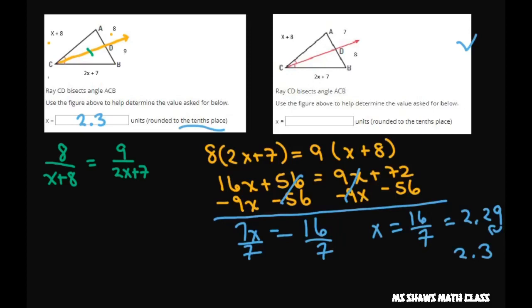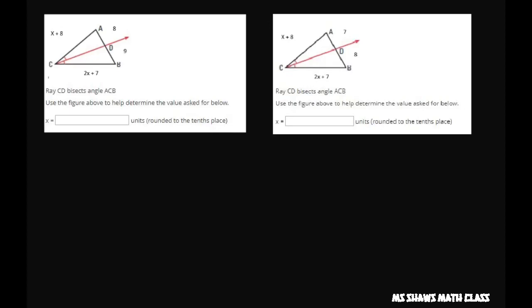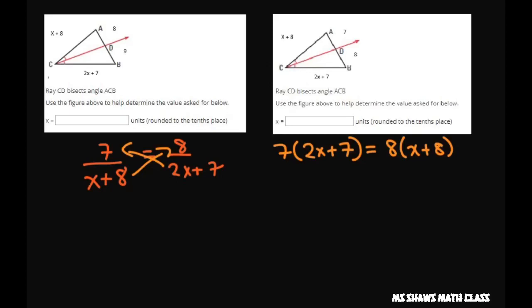The only difference is these two numbers. So we're going to set up the proportion: 7 is to x plus 8 as 8 is to 2x plus 7. You cross multiply, you get 7 times 2x plus 7 equals 8 times x plus 8.